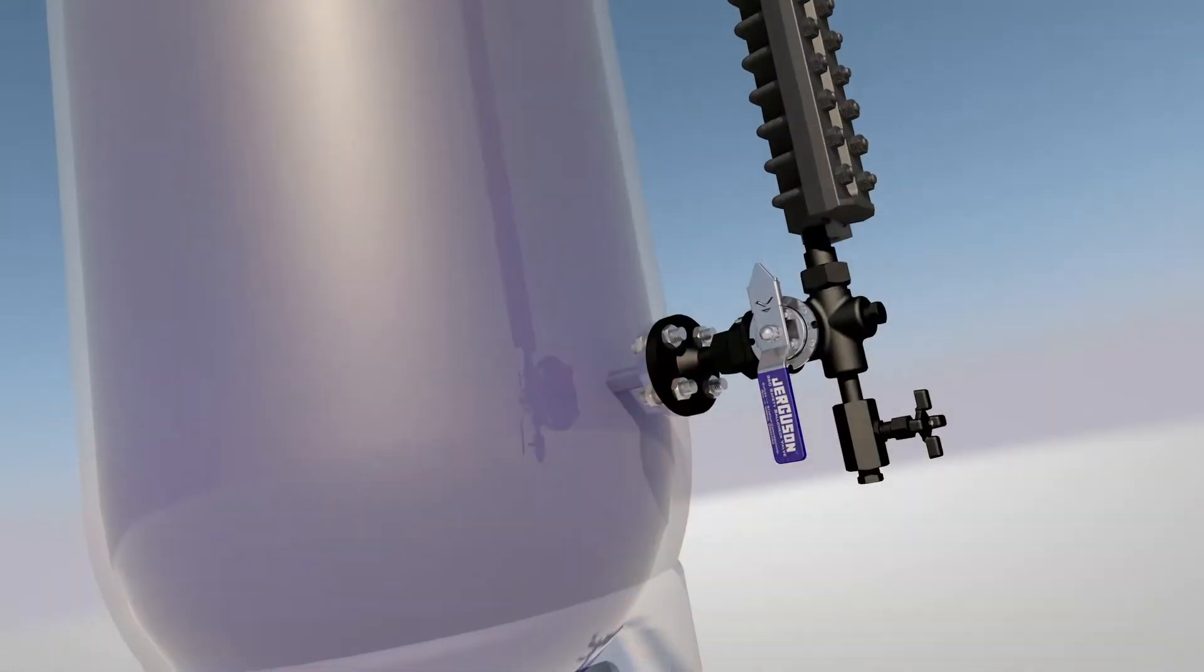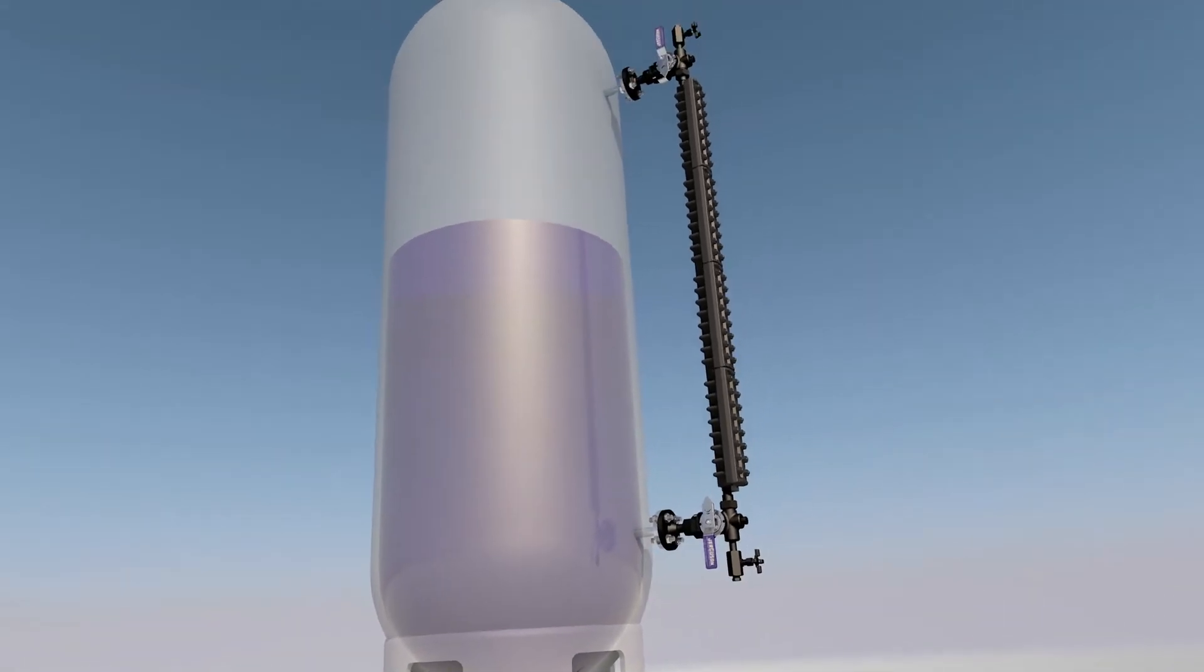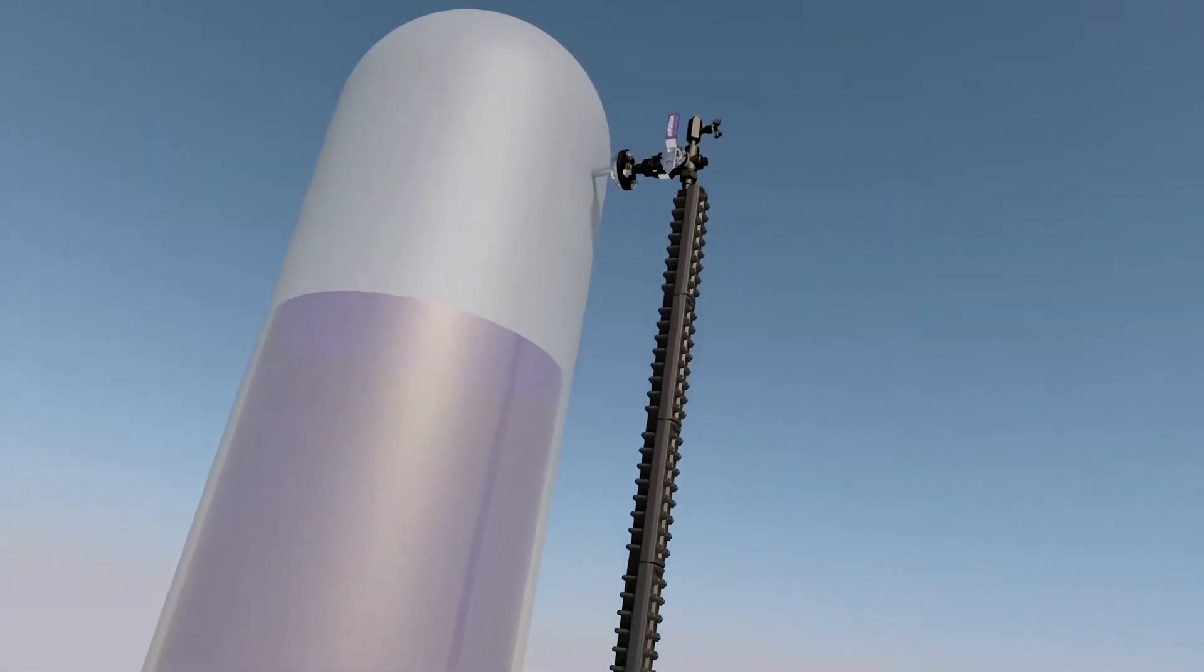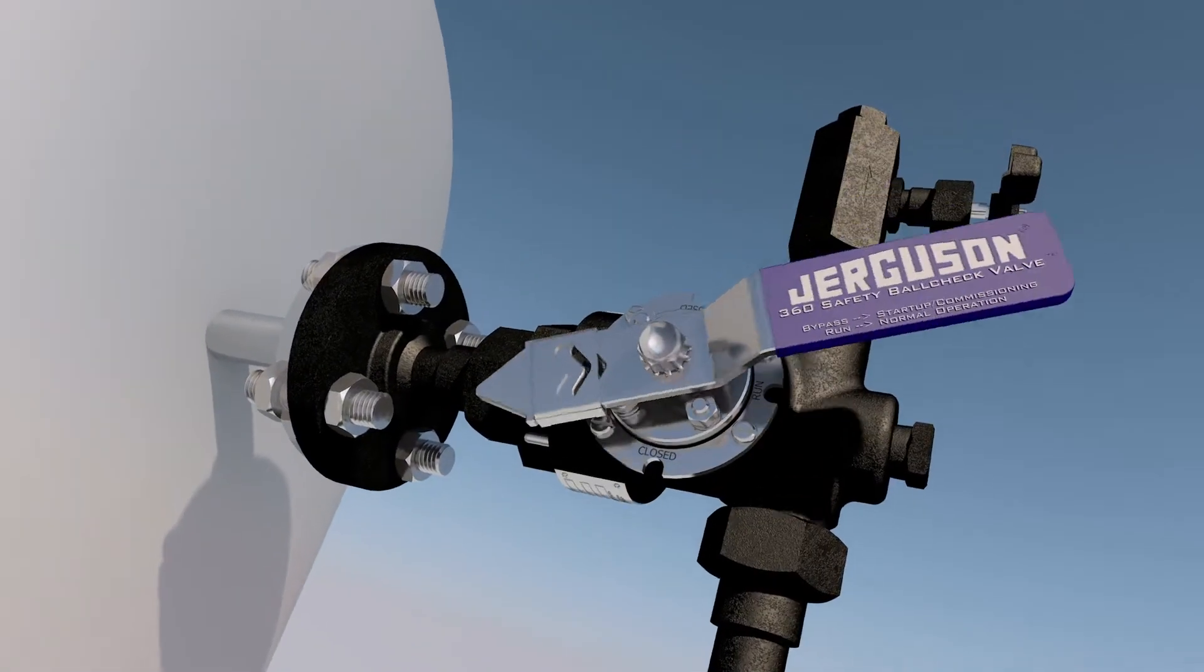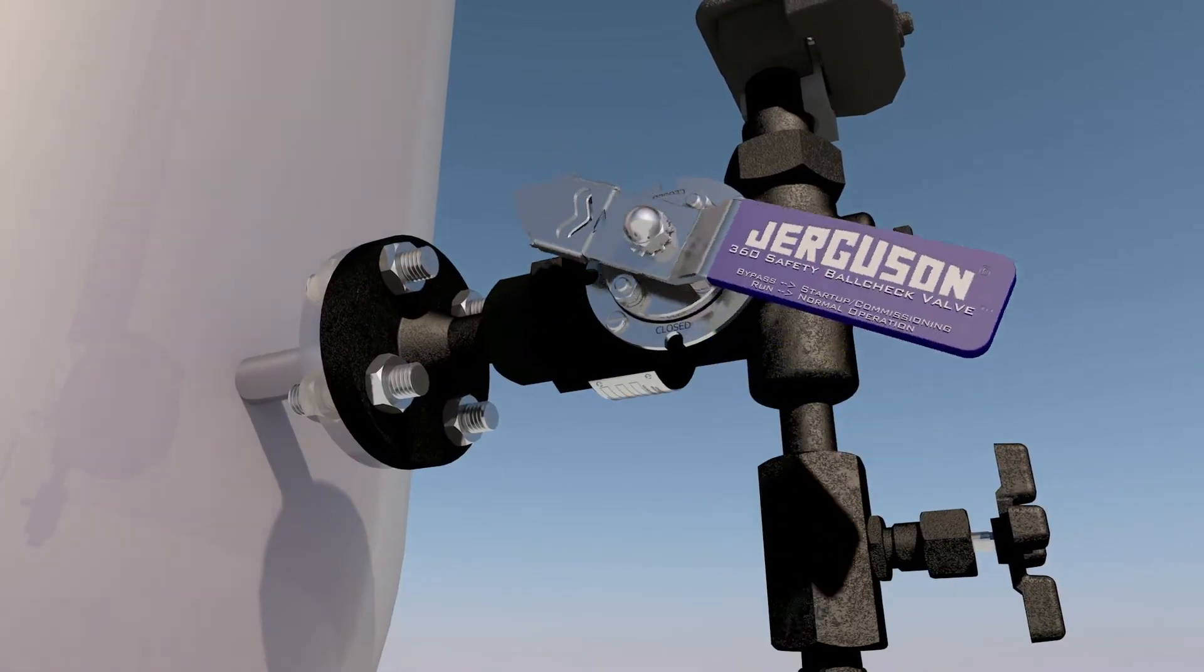The commissioning procedure is quite simple compared to traditional glass gauge ball check valves. When there is already liquid present in the vessel, open the top valve to the bypass position, then the bottom valve.